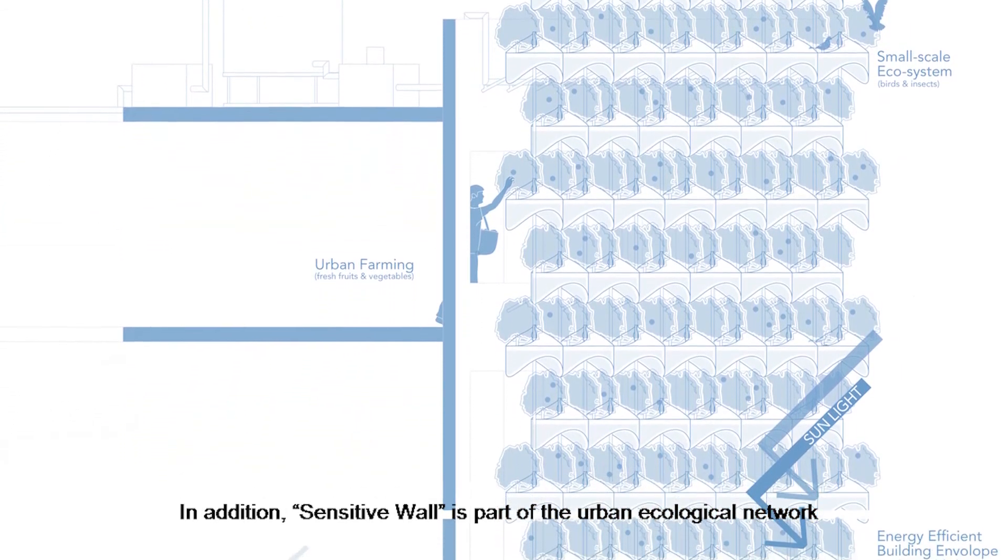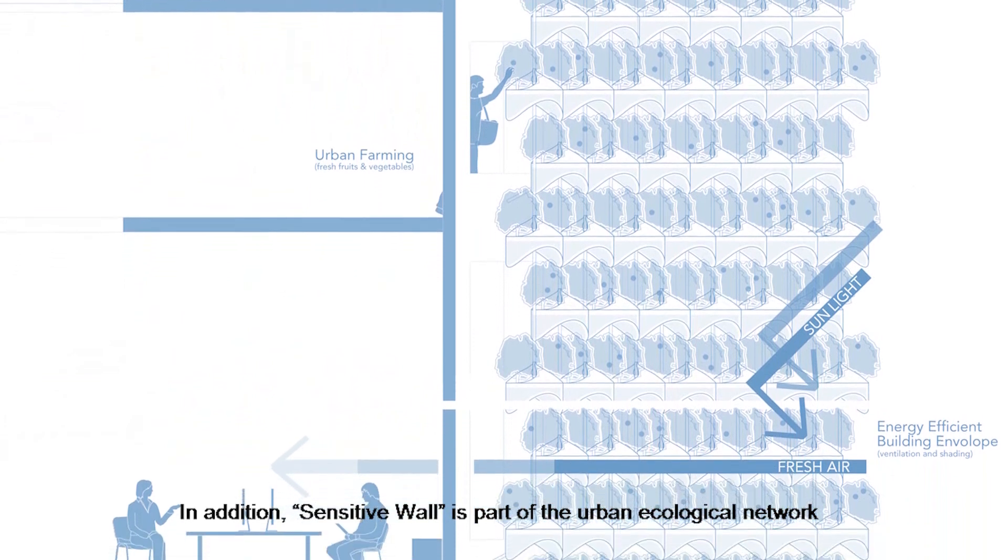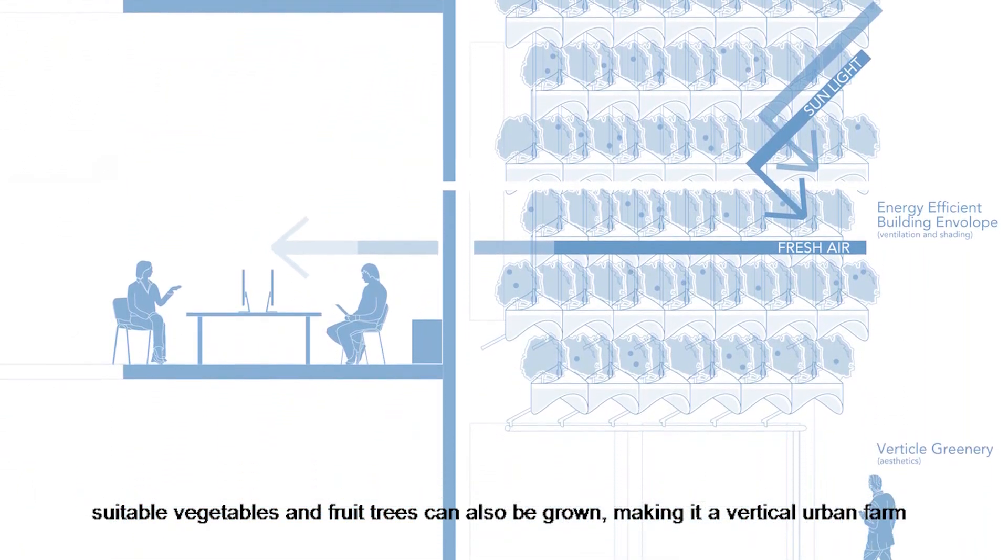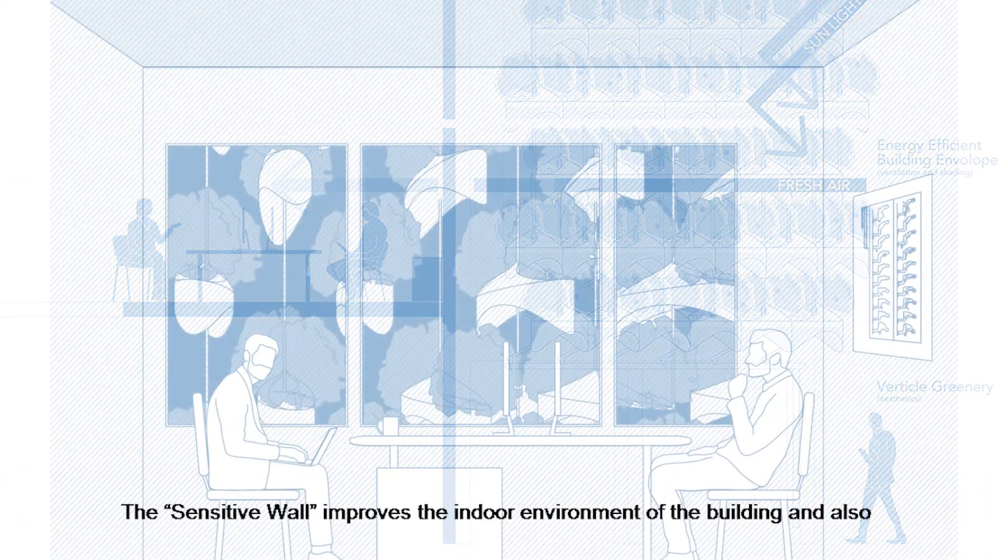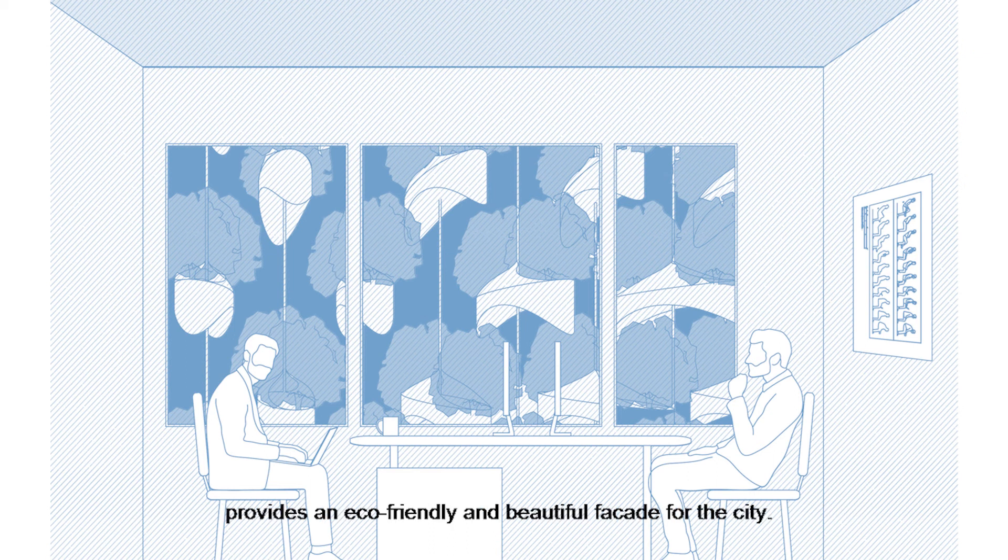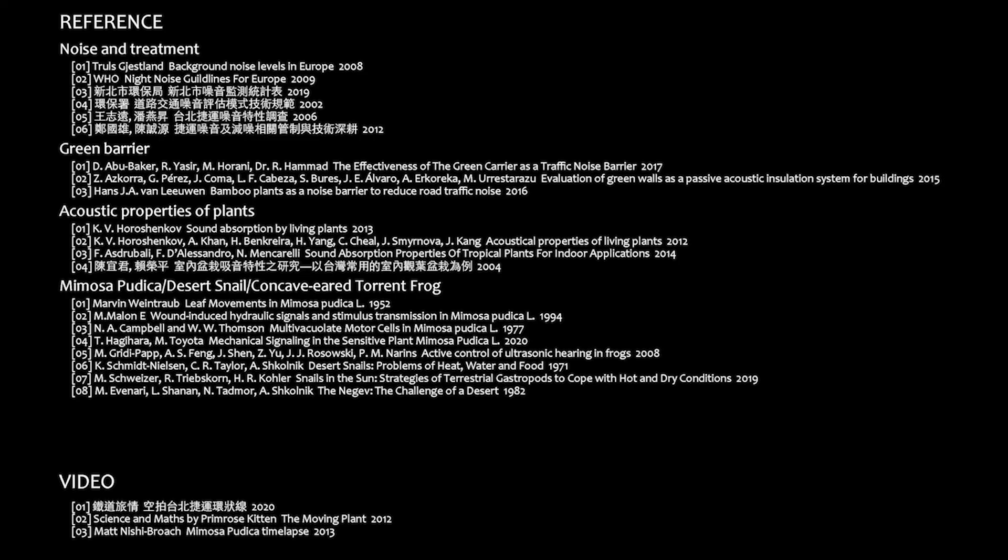In addition, the sensitive wall is part of the urban ecological network. Suitable vegetables and fruit trees can also be grown, making a vertical urban farm. The sensitive wall improves the indoor environment of the building and also provides an eco-friendly and beautiful facade for the city.